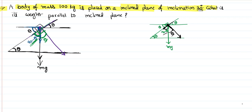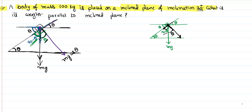So mg has a component along the direction adjacent to the angle theta, which becomes mg cos theta. This is one component of mg — that is mg cos theta — and the other perpendicular component is mg sin theta. So mg can be resolved as mg cos theta and mg sin theta, because mg is a vector force and can be resolved into components.